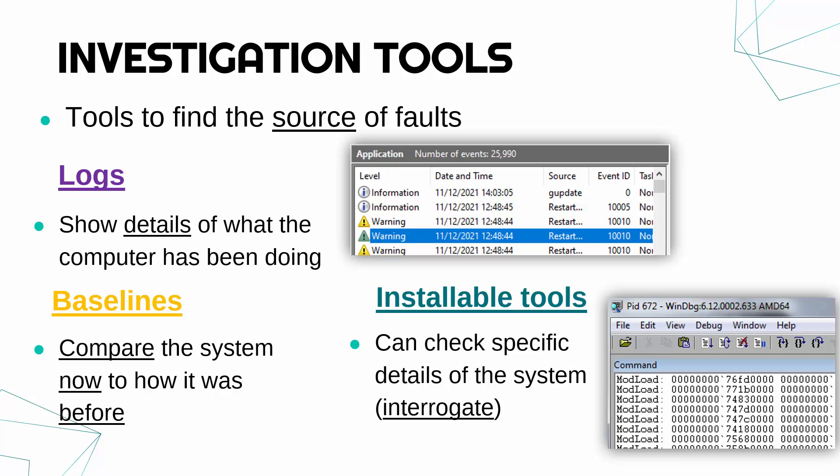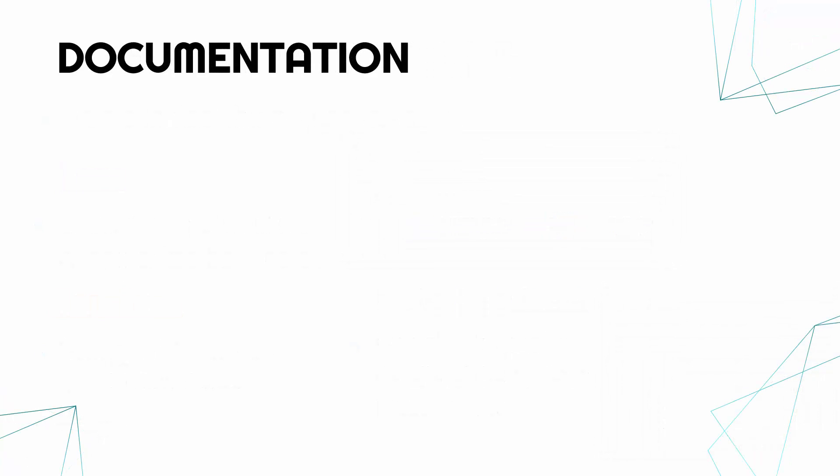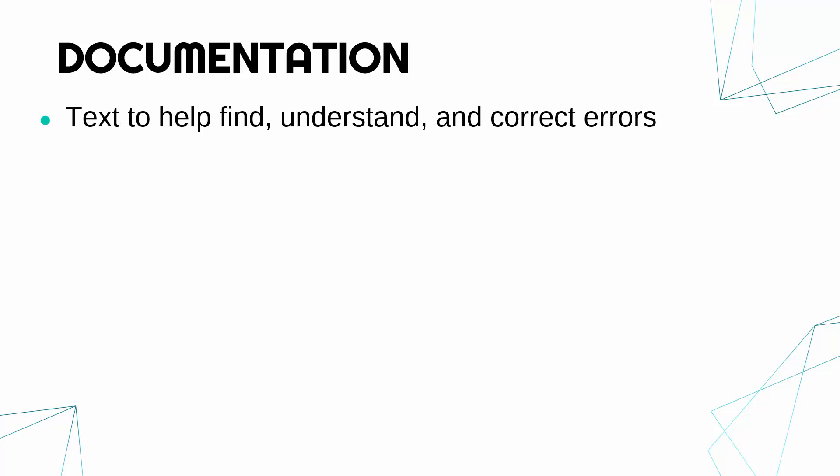These three examples — logs, baselines, and installable tools — are mentioned by the exam board, though there are clearly many more investigation tools. Even antivirus is a good example, because you might have a very slow or buggy computer and suspect you've got a virus. Antivirus software would help you confirm whether or not you do. To end on a final fairly broad idea: documentation is often very useful for troubleshooting — where you've got a bunch of text which helps you find, understand, and correct errors.